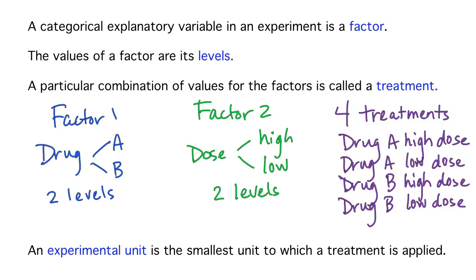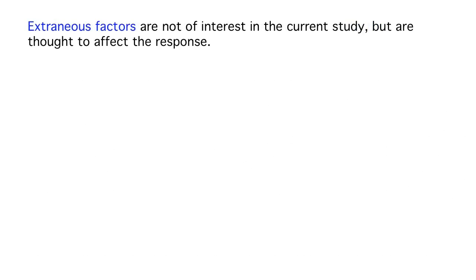Using this vocabulary, the key feature that separates an experiment from an observational study is that treatments are imposed on experimental units by the researcher so that the effect of the treatments on the response can be seen. Extraneous factors are factors that are not of interest in the current study but are thought to affect the response. They need to be controlled to rule out the possibility that the extraneous factor is causing any observed differences in the response.